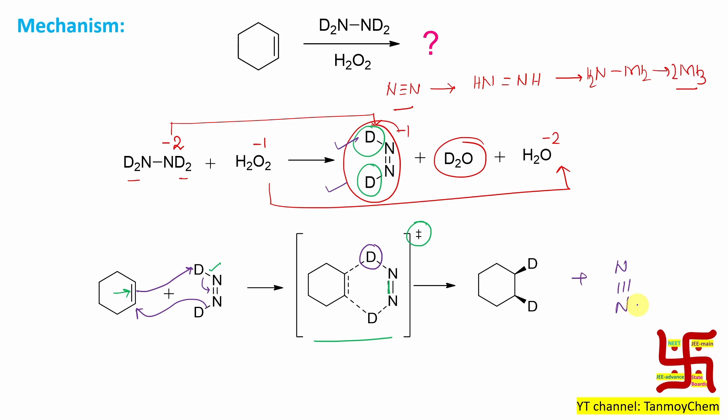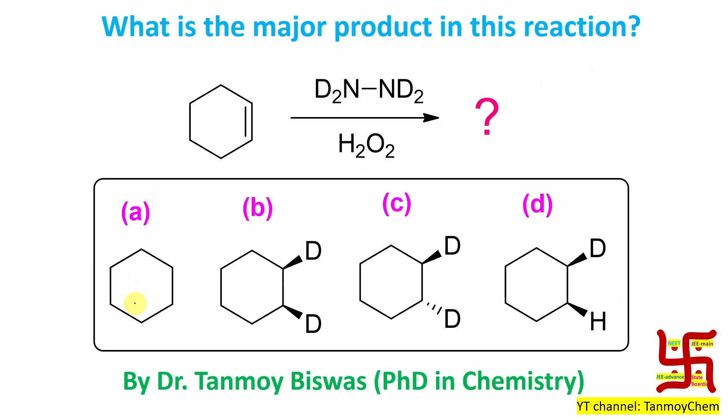So this is the overall reaction of diamide reduction. It's a very unique reaction for reduction of this carbon-carbon double bond or pi bond. So what is the major product in this reaction? Obviously option C is this one.